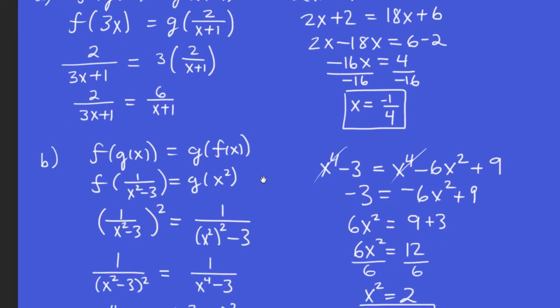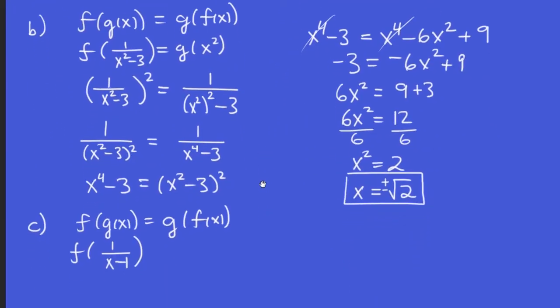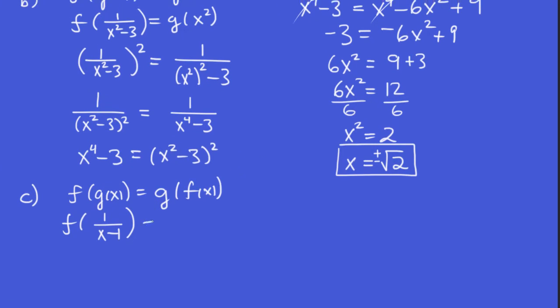Yeah, 1 over x minus 1 and 2x. And F is 2x. It's a little bit messy.